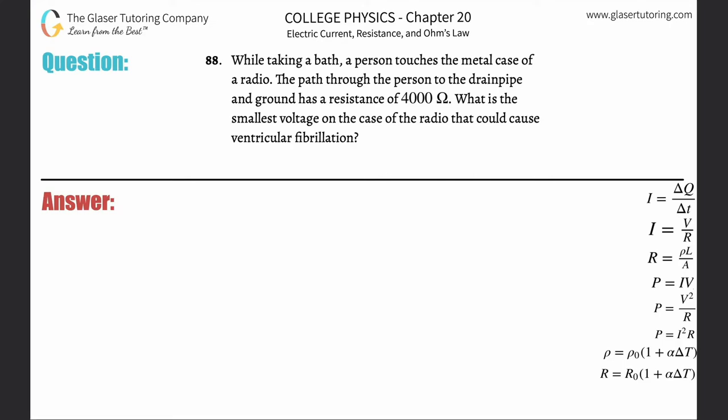While taking a bath, a person touches the metal case of a radio. The path through the person to the drain pipe and ground has a resistance of 4,000 ohms. What is the smallest voltage on the case of the radio that could cause ventricular fibrillation?